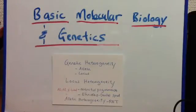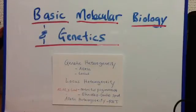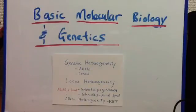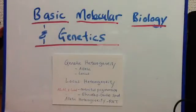We're going to talk about genetic heterogeneity, specifically the allelic type and the locus type of heterogeneity. Genetic heterogeneity includes a number of phenotypes that are similar but are actually determined by different genotypes, and this may be due to allelic heterogeneity, locus heterogeneity, or both.